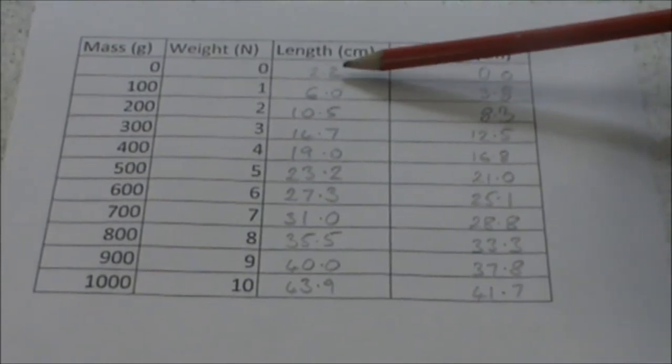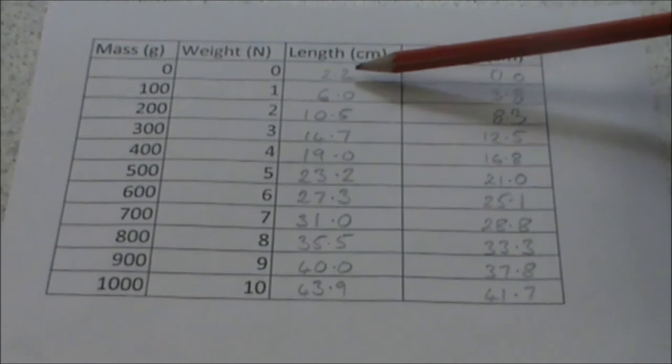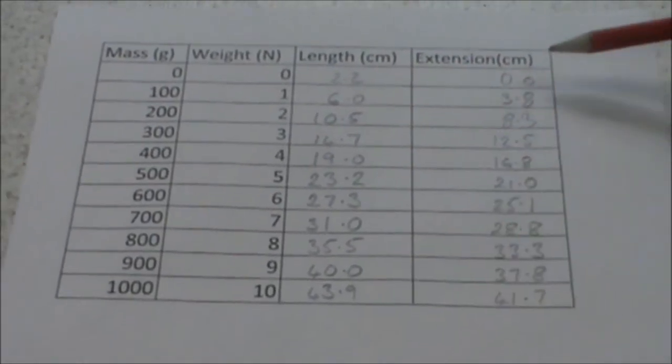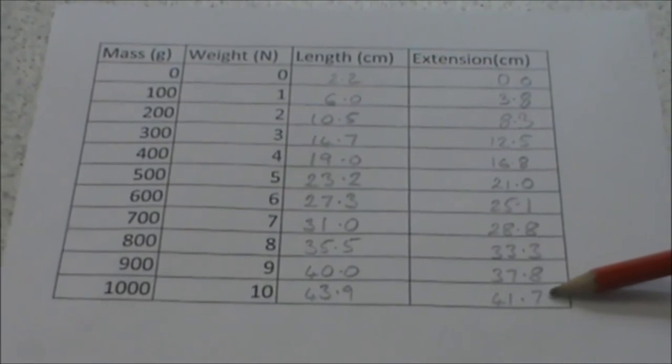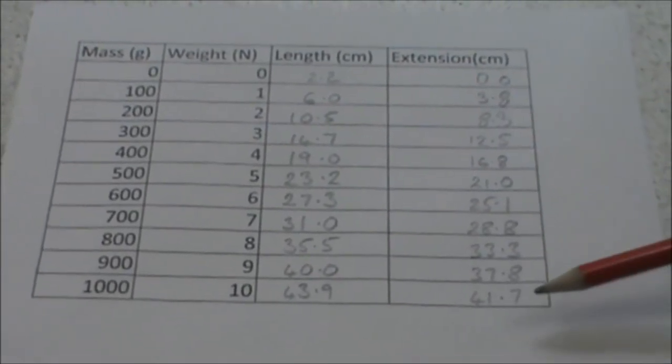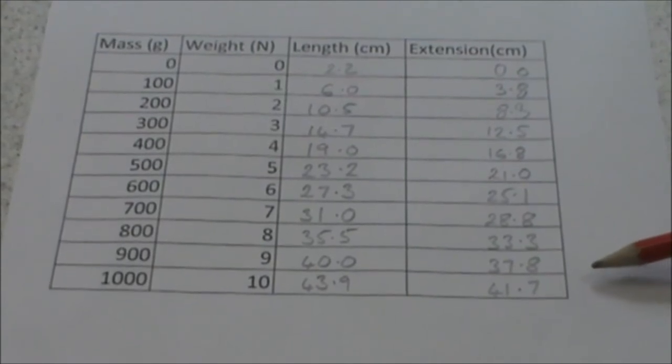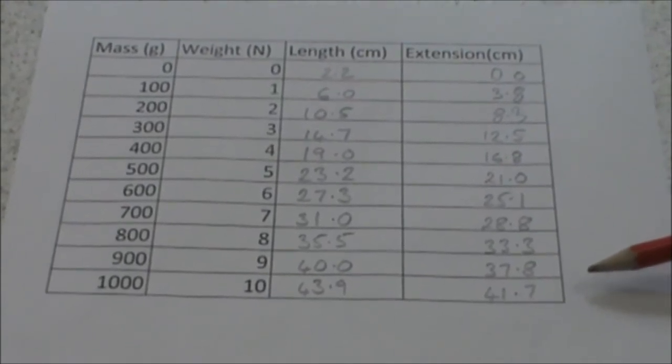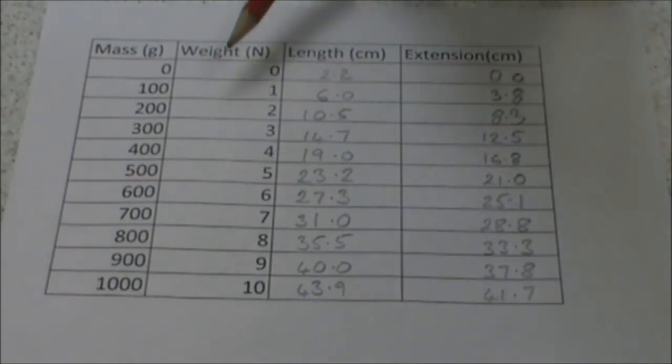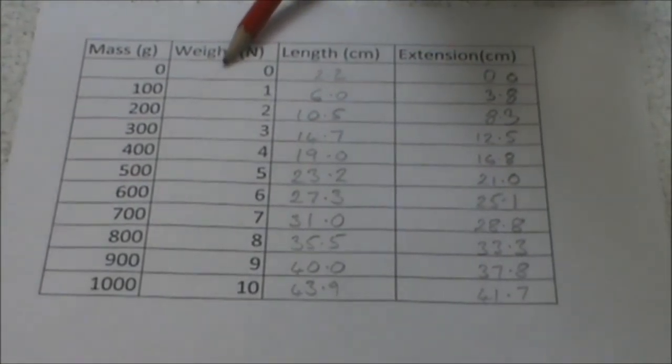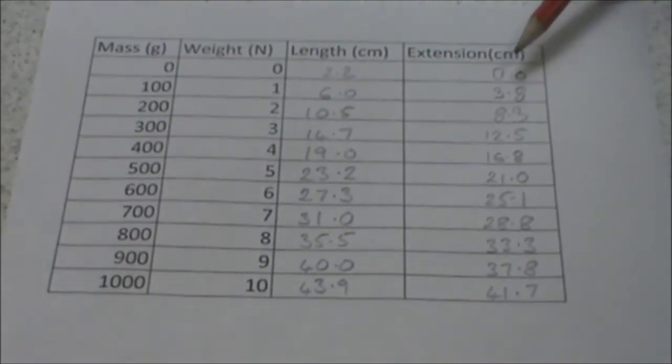And we repeat this all the way down our results table. So there we have our results for extension. Notice that I've always worked to one decimal place. If I've measured to one decimal place I can only quote my calculations to either one decimal place or zero decimal places. I cannot go to two decimal places because that would imply improved accuracy.